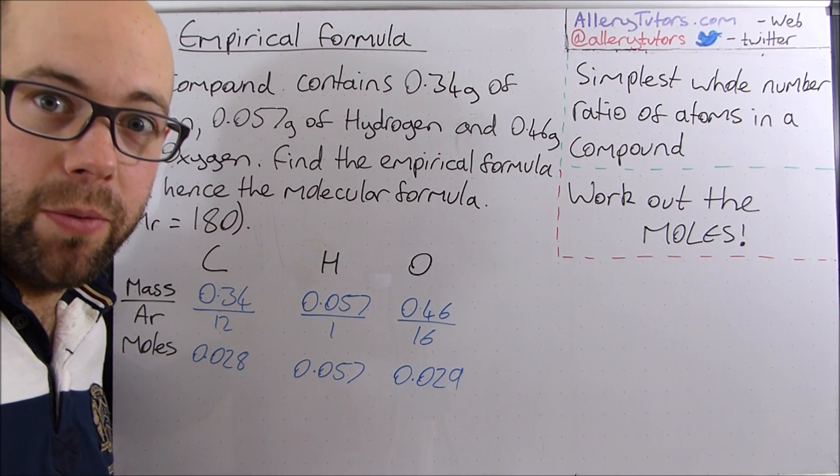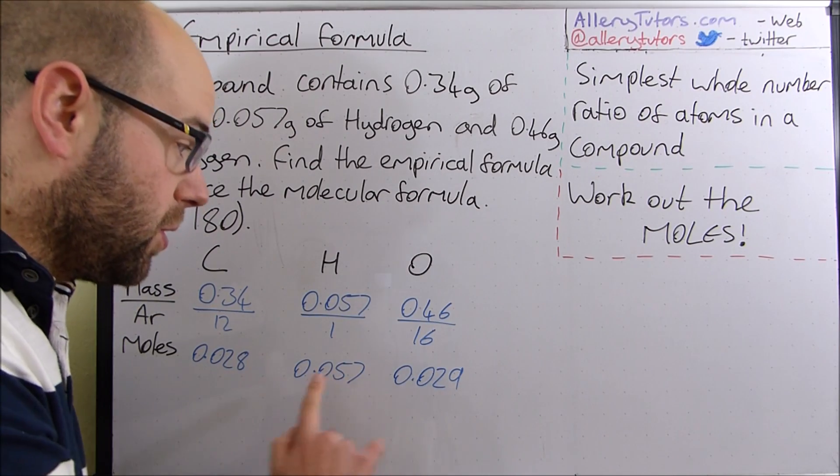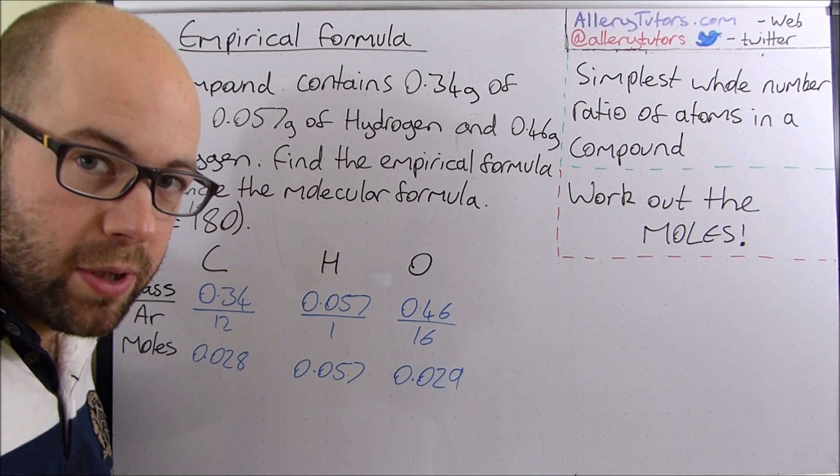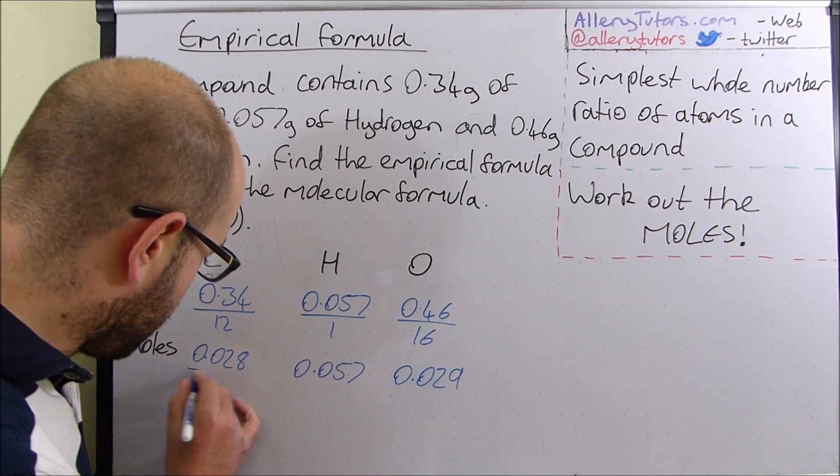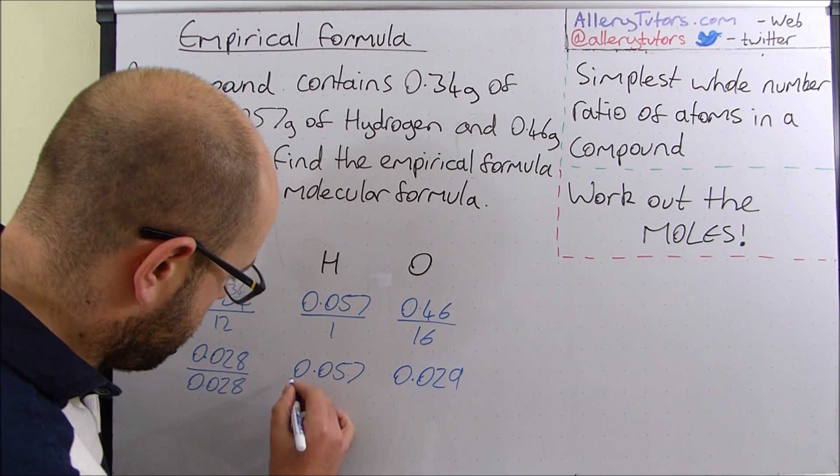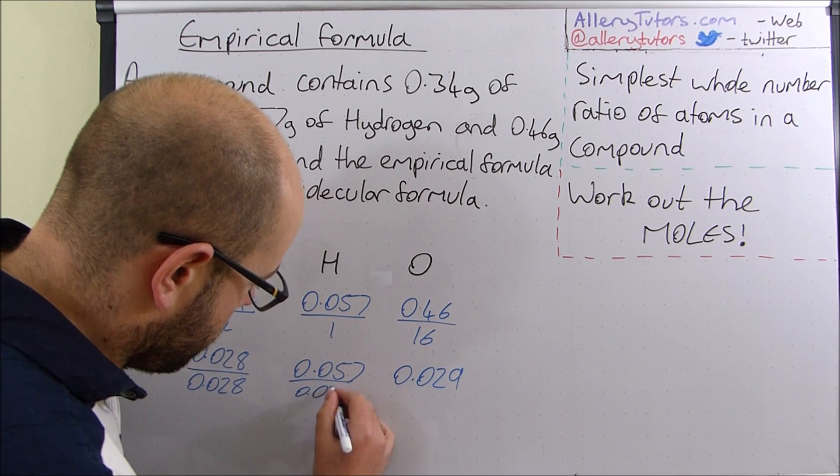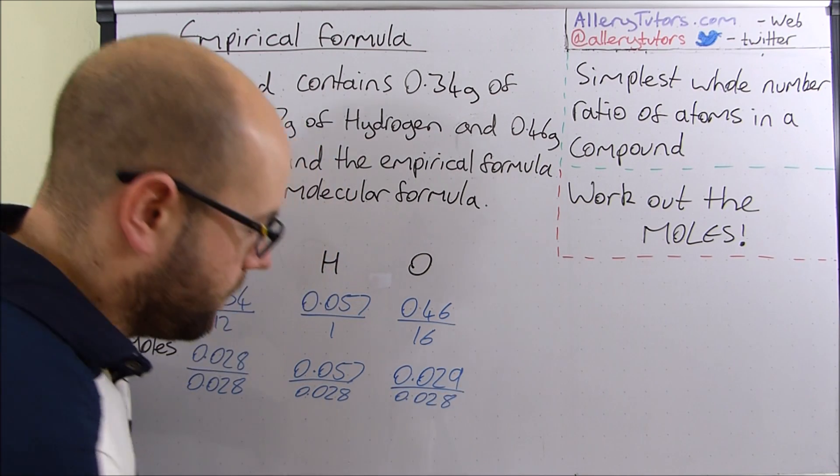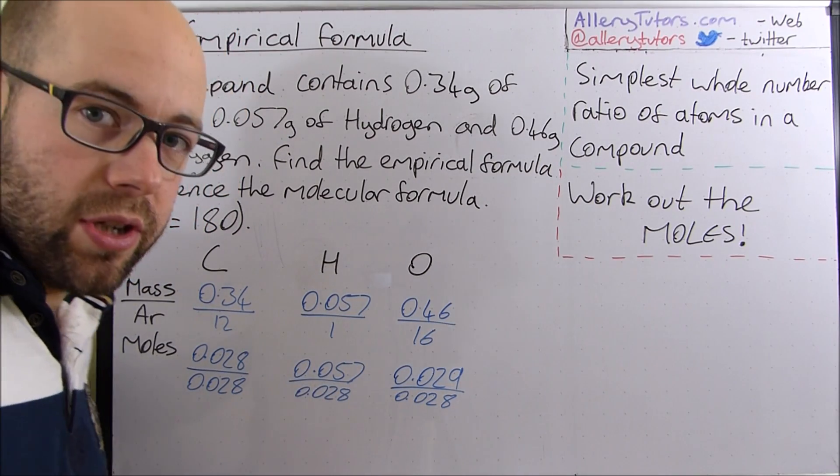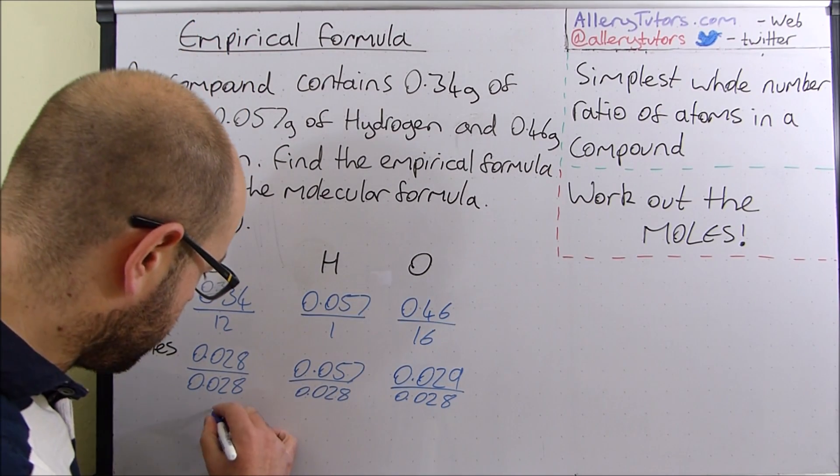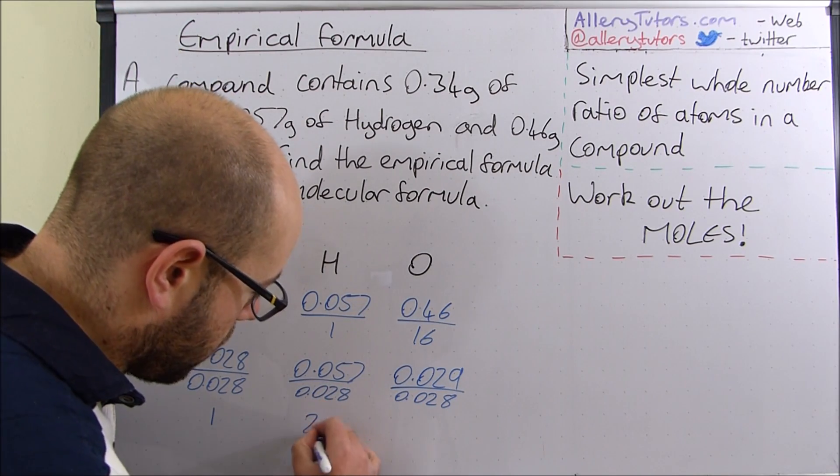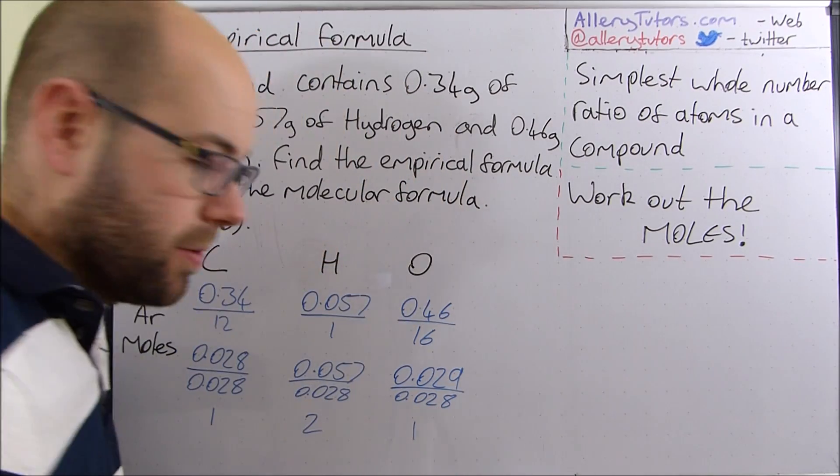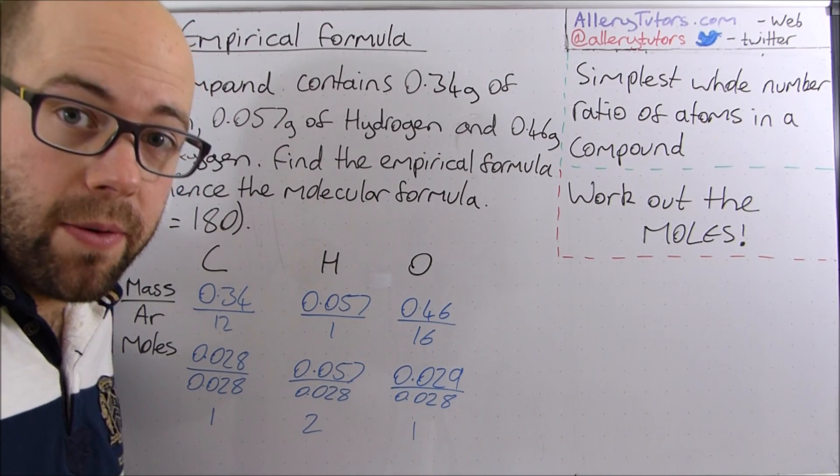Now with all empirical formulas what we have to do is we have to divide by the smallest number of moles. Now the number of moles here which is the smallest is this one here which is 0.028. So what we do is we divide all of them by 0.028. We put all these into our calculator and we should get a ratio. Now this one obviously comes out as 1, this one comes out pretty much close to 2, it's really really close to 2 so we can round it to that and again this one comes out 1. So we've got our ratio here.